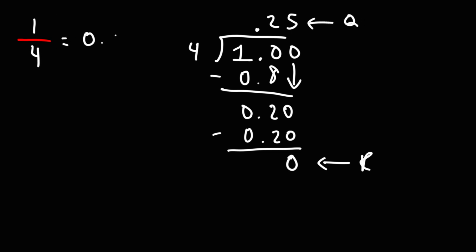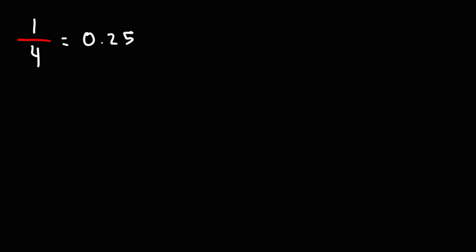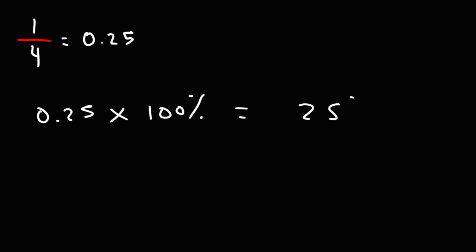So 1 over 4 as a fraction is 0.25 as a decimal. Now that we have the decimal equivalent, to convert the decimal to a percentage, we just multiply it by 100%, and that gives us 25%. So 1 over 4 as a fraction is equal to 25%.